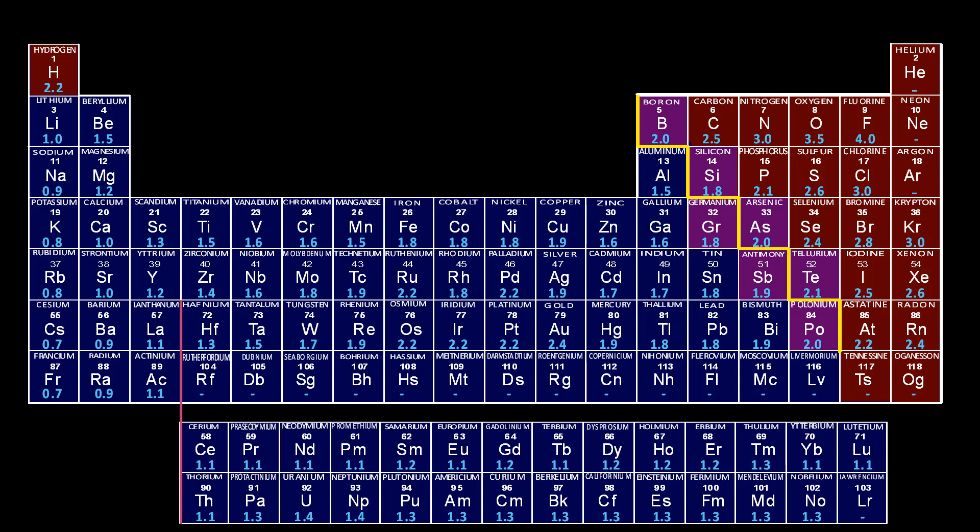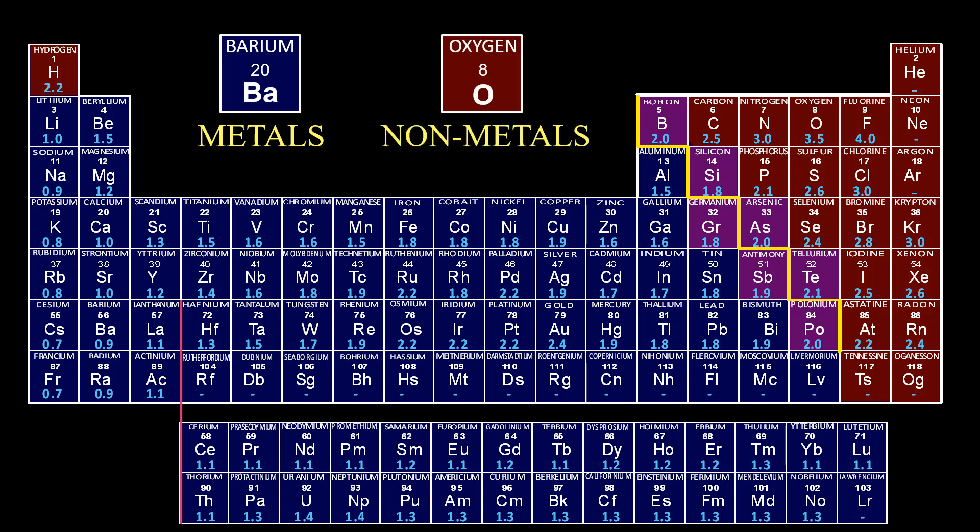On the periodic table, we can distinguish metals and nonmetals by their location on the table. Metals and nonmetals are divided by the stair step line, seen here in yellow, and metals are to the left of the stair step in blue, nonmetals are to the right in brown, with metalloids along the stair step in purple.